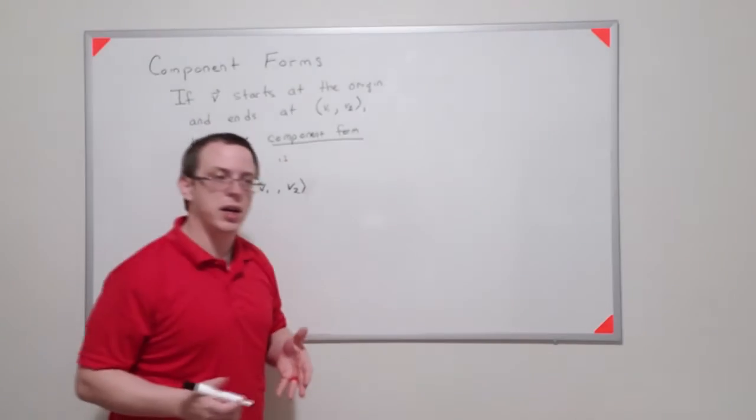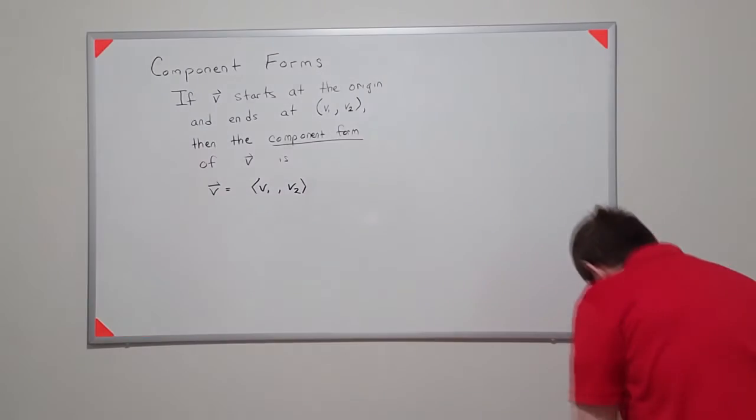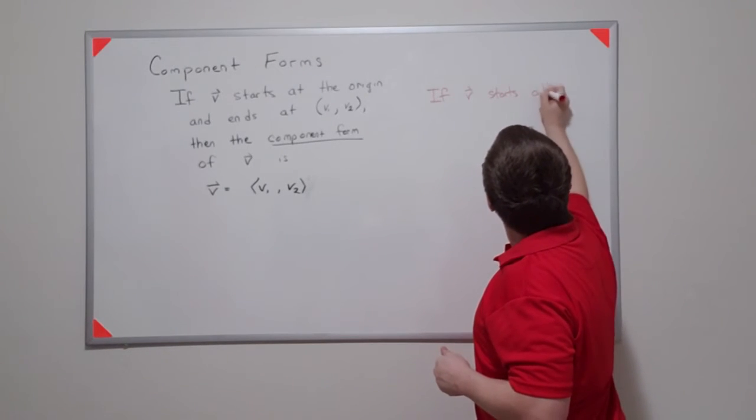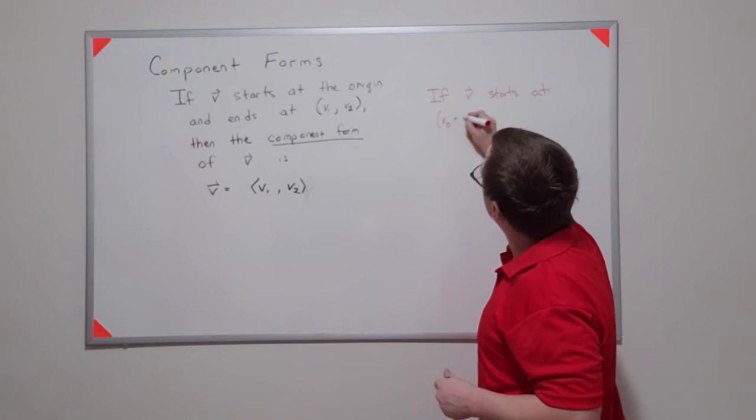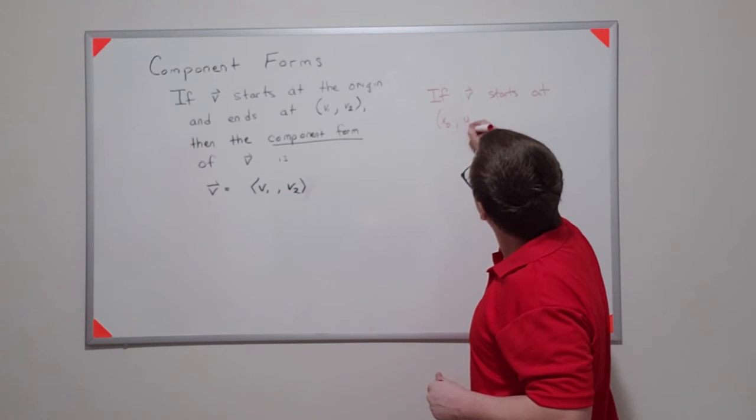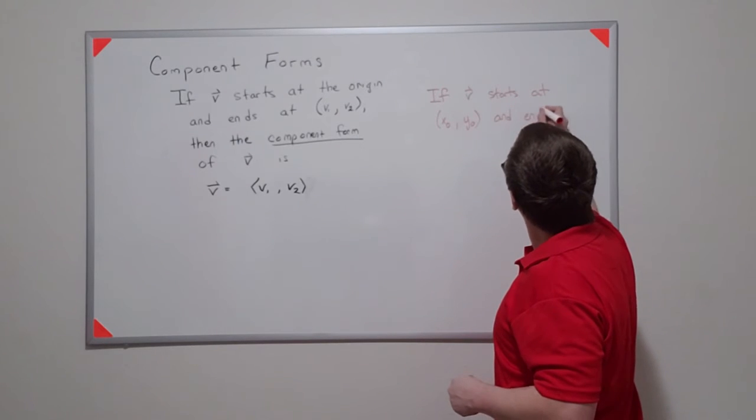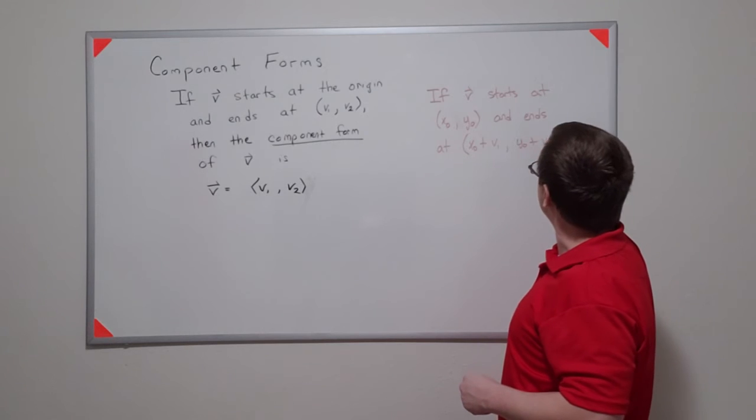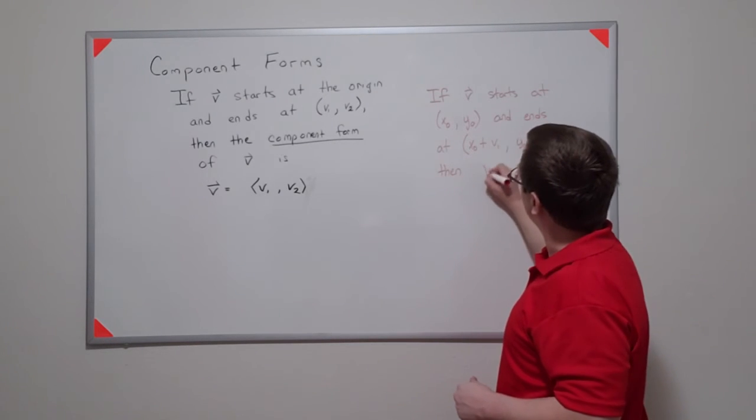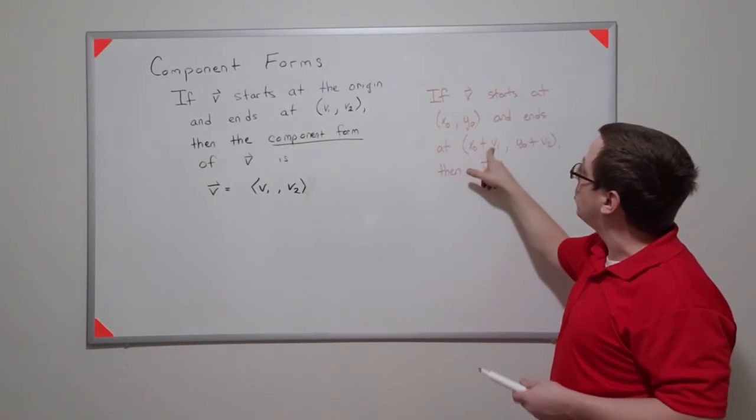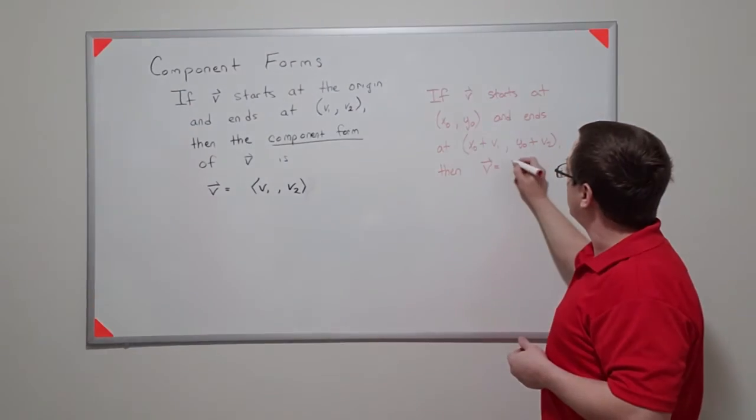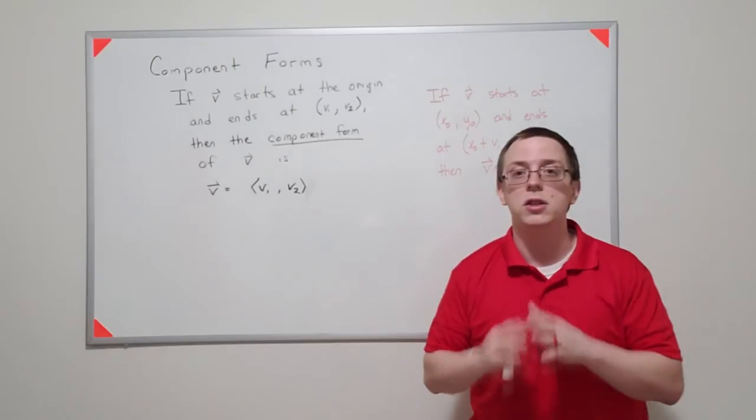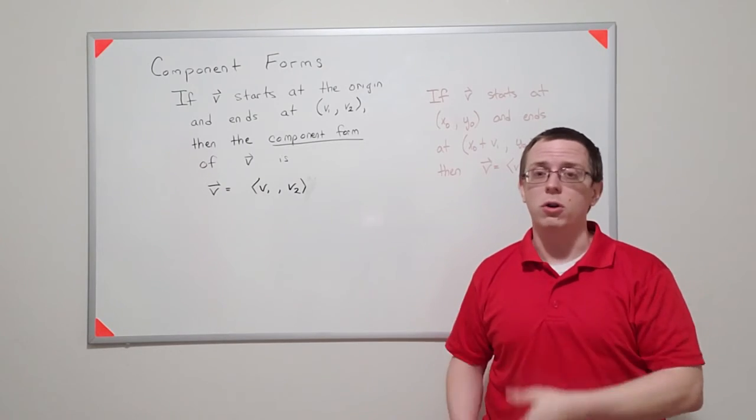So if you thought about it, you could say the same idea. If I said if v starts at (x0, y0) and ends at (x0 + v1, y0 + v2), well, in this particular case, notice that we've still only gone a distance of v1 or a distance of v2. So it's the same vector. Remember that it only depends on how far you've gone, not necessarily where you start or not necessarily where you end.